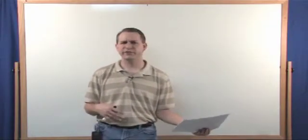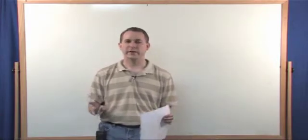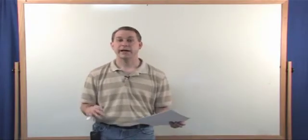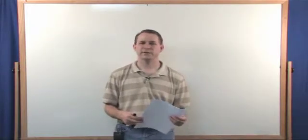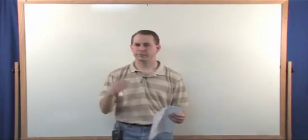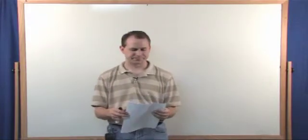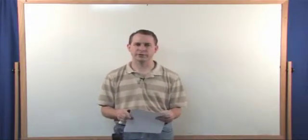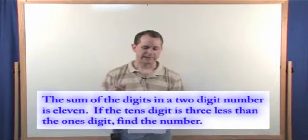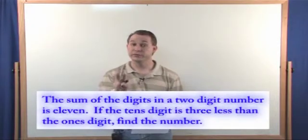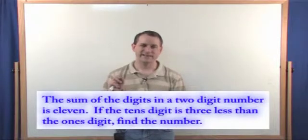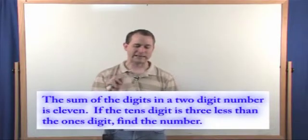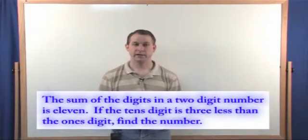They'll say something like the tens digit is two more than the ones digit and you'll be given some information and they'll generally say find the number. That can be kind of confusing when you first start to tackle it but we'll take it step by step through some problems here and I think it'll be clear. So the first problem that we're going to do today goes like this. The sum of the digits of a two digit number is eleven. If the tens digit is three less than the ones digit, find the number.